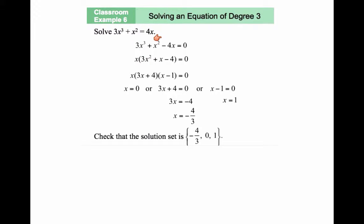Solve 3x cubed plus x squared is equal to 4x. It's not in standard form, so we need to move everything to one side of the equation. If I subtract 4x from both sides of the equation, I would get 3x cubed plus x squared minus 4x equal to 0.